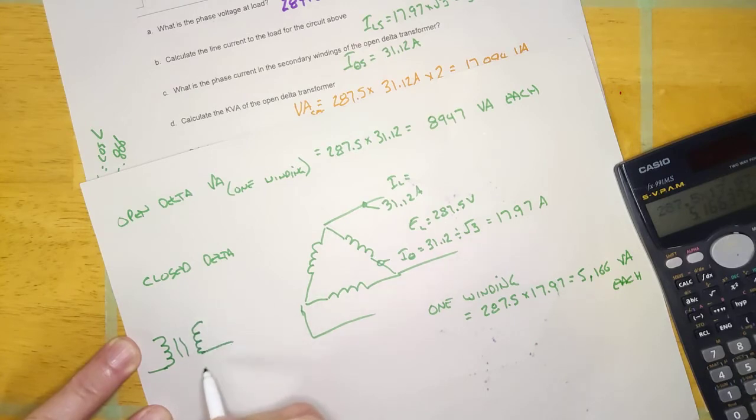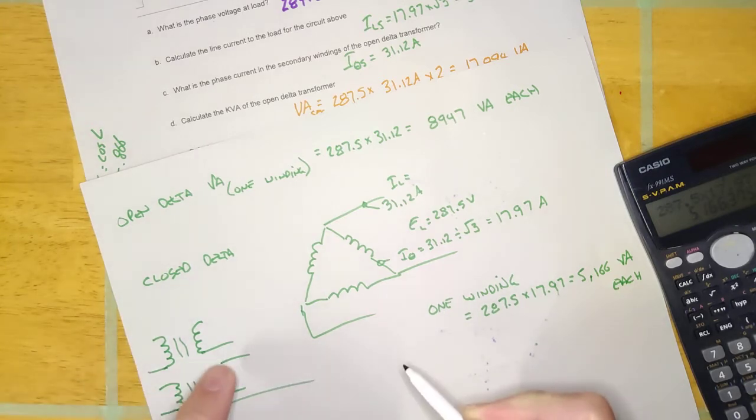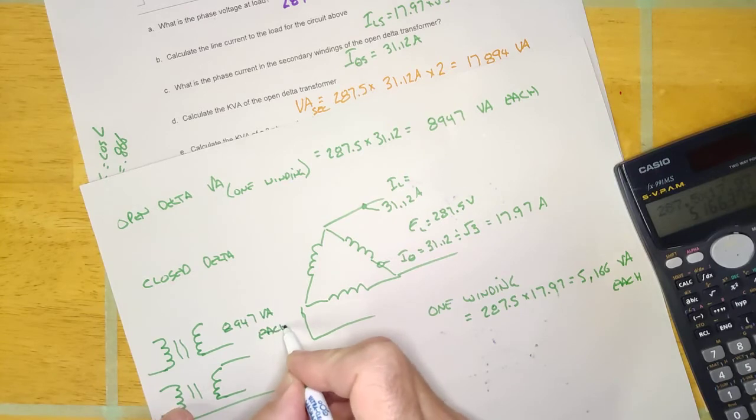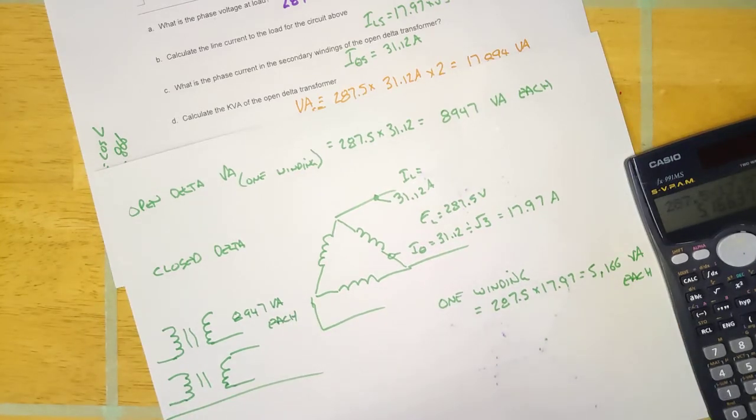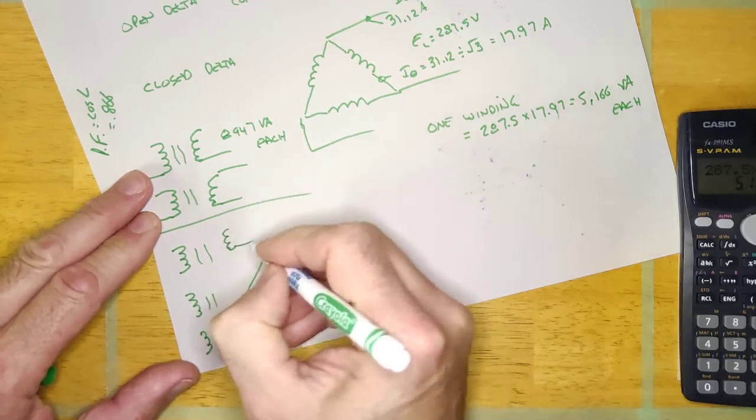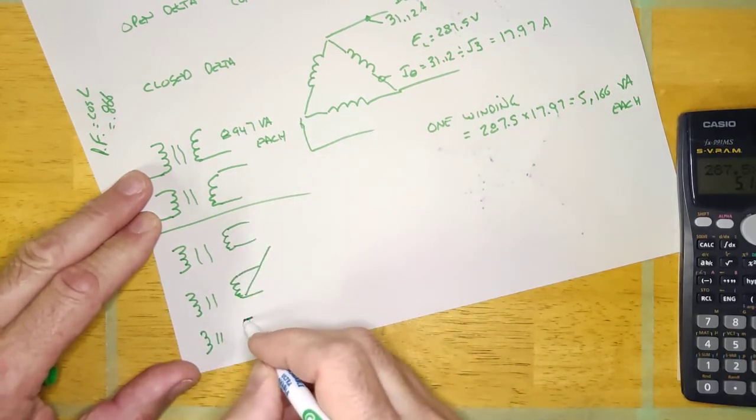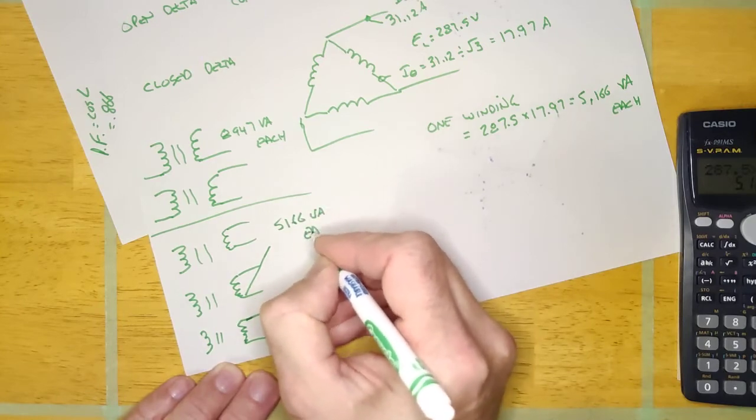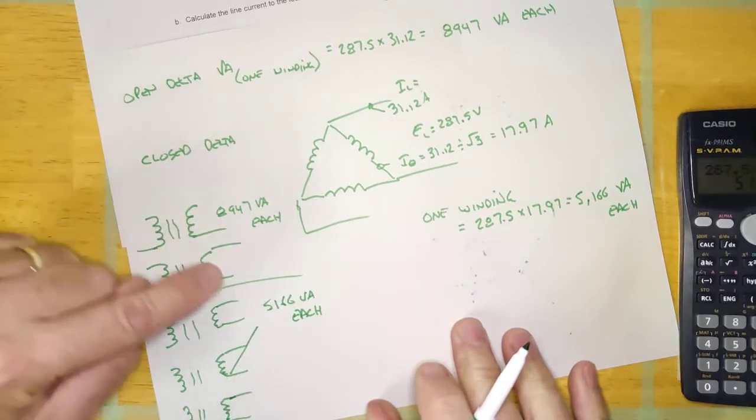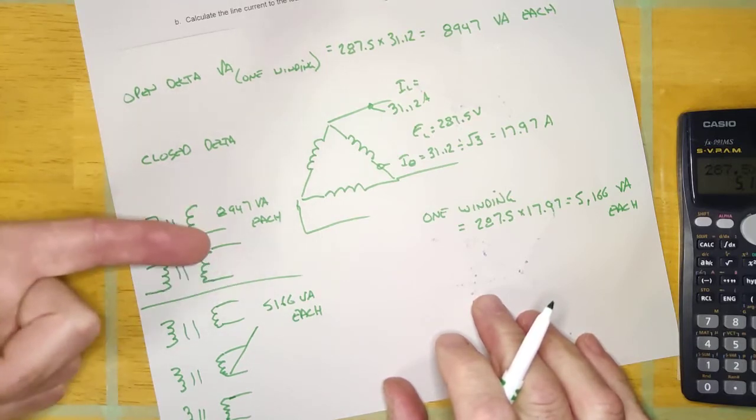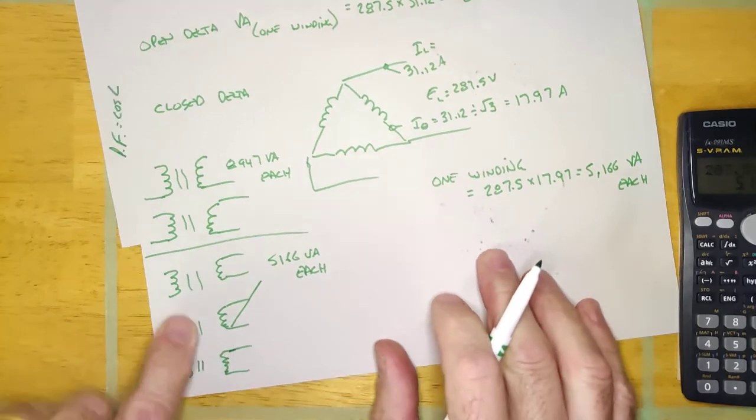And so basically guys, the open delta would look like this. This would be 8,947 VA each. All right, and here's my closed delta guys. It would be three of them, right? And they would be 5,166 VA each.